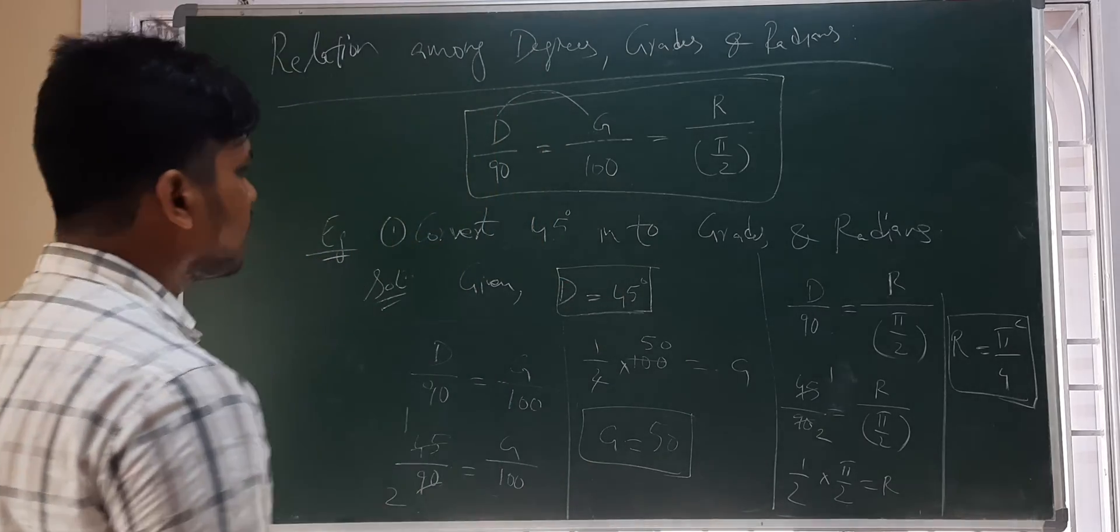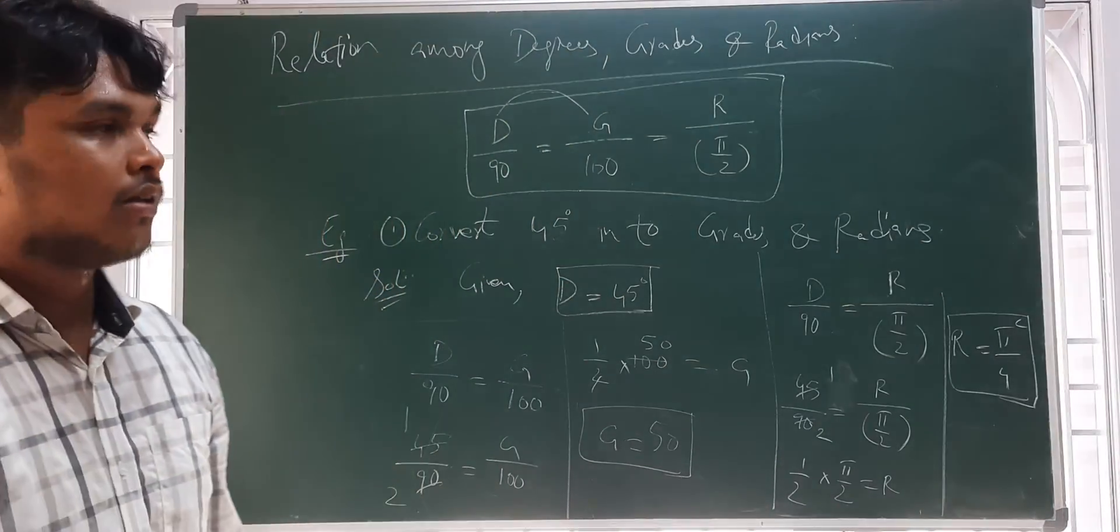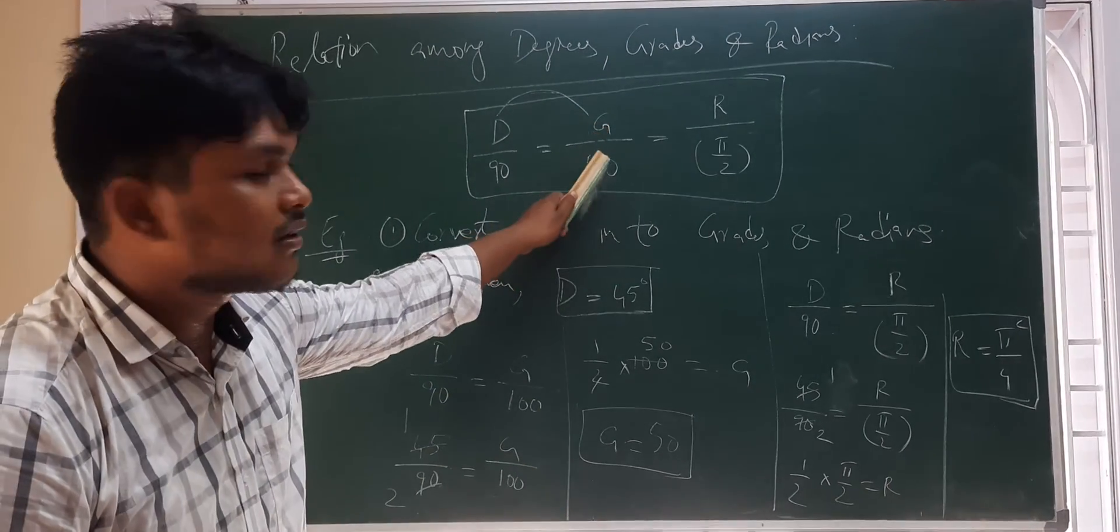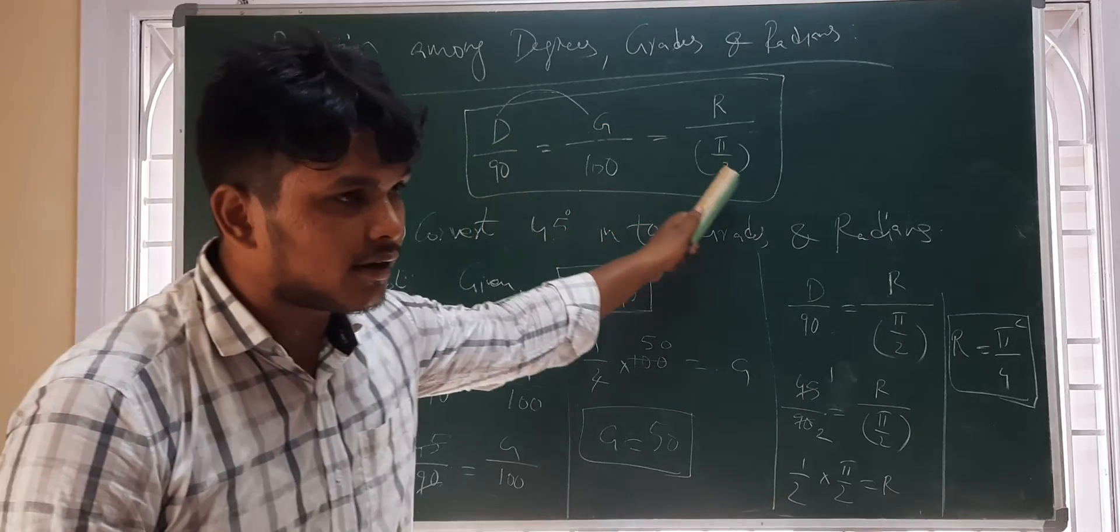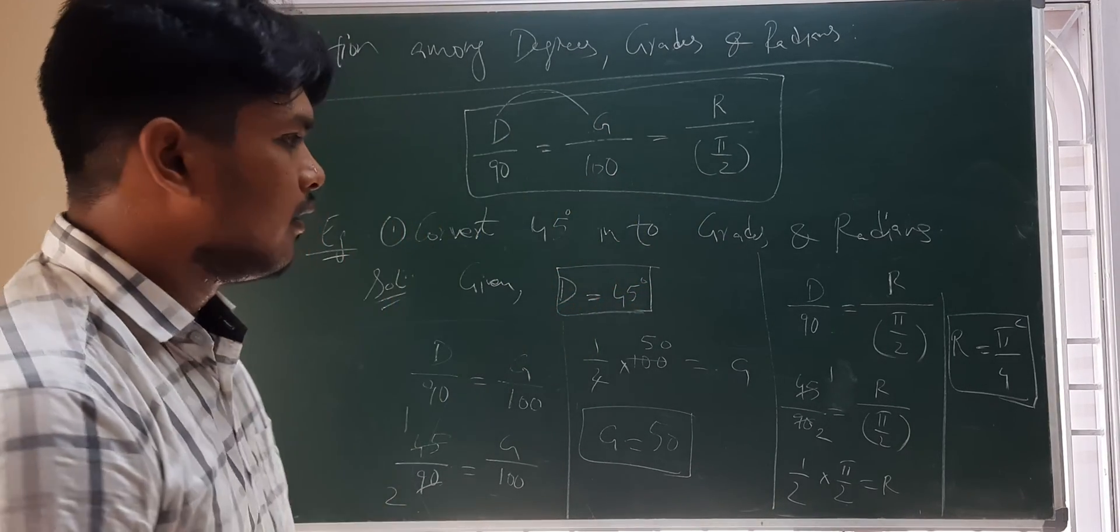So, this is how we will convert degrees into grades or degrees into radians. Similarly, if they give grades and convert into degrees and radians, we will use the similar relation and convert. That's it.